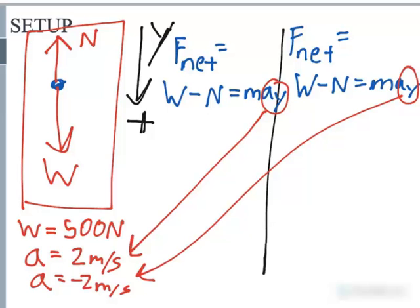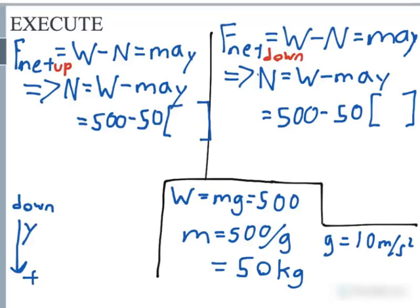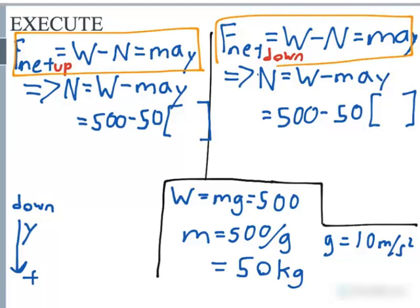So let's go ahead and execute this. So here I went ahead and executed part of the problem. This is what we saw in the last step of setting it up. We had F net for the up direction equal the weight minus the normal force, which equals the mass times the acceleration in the Y direction. Now if we went ahead and rearranged it here in this next step, we got the normal force, and that will equal the weight of the man who is in the elevator minus the mass and the acceleration.